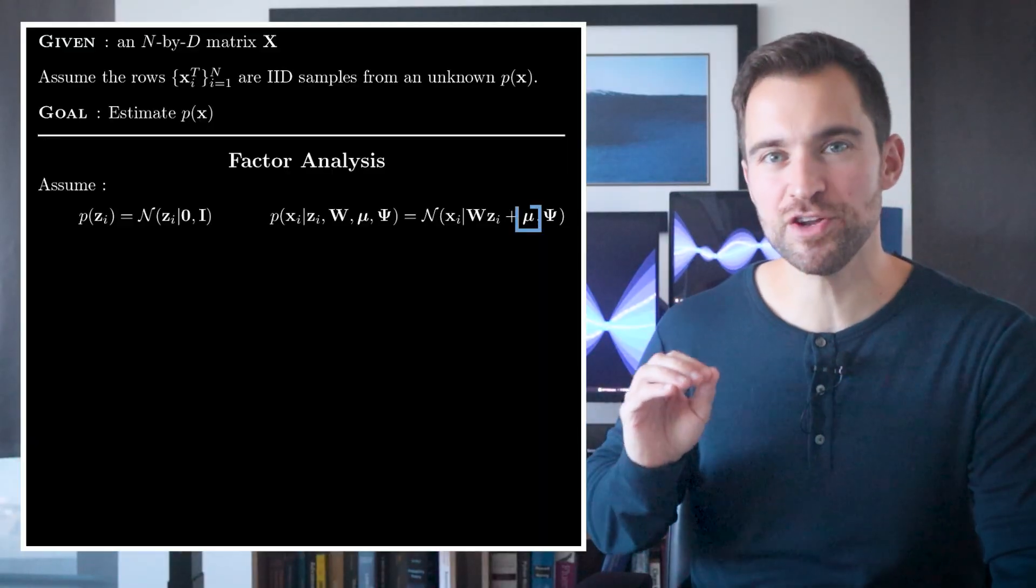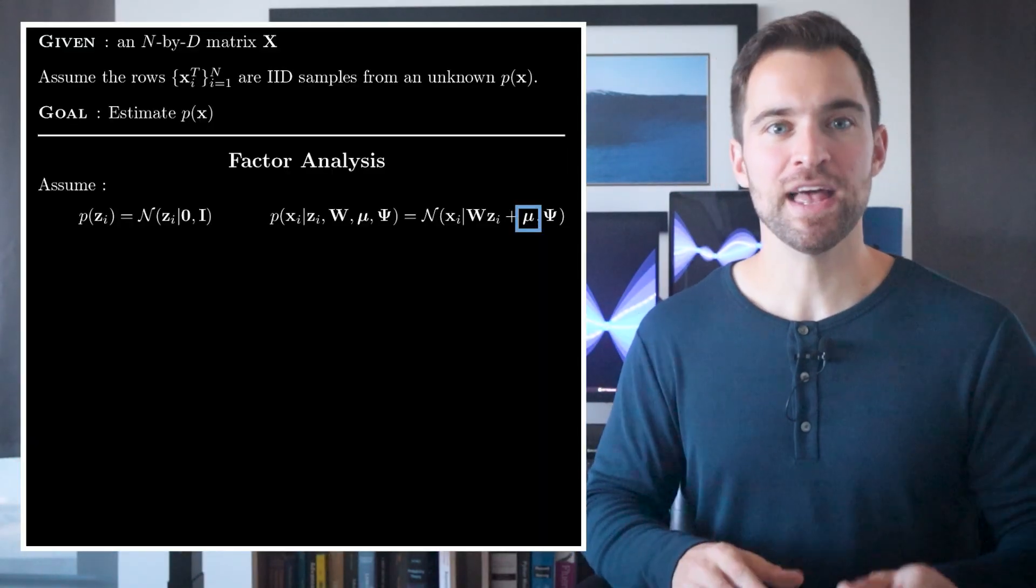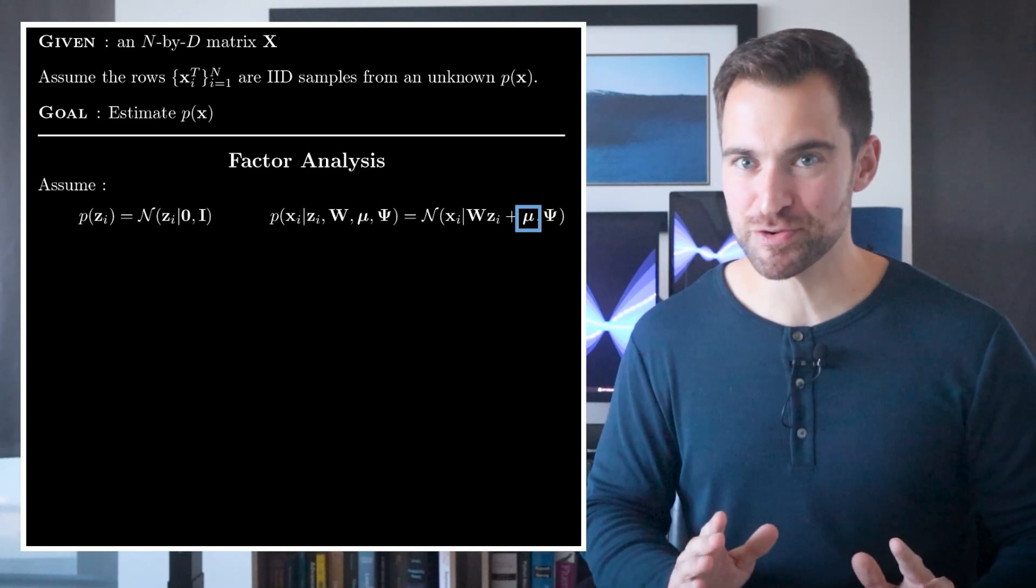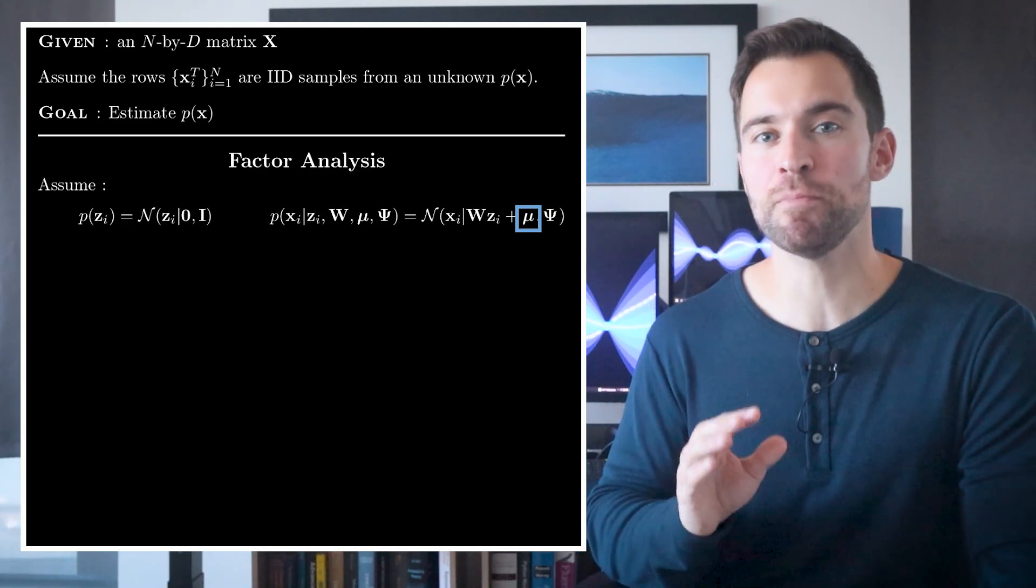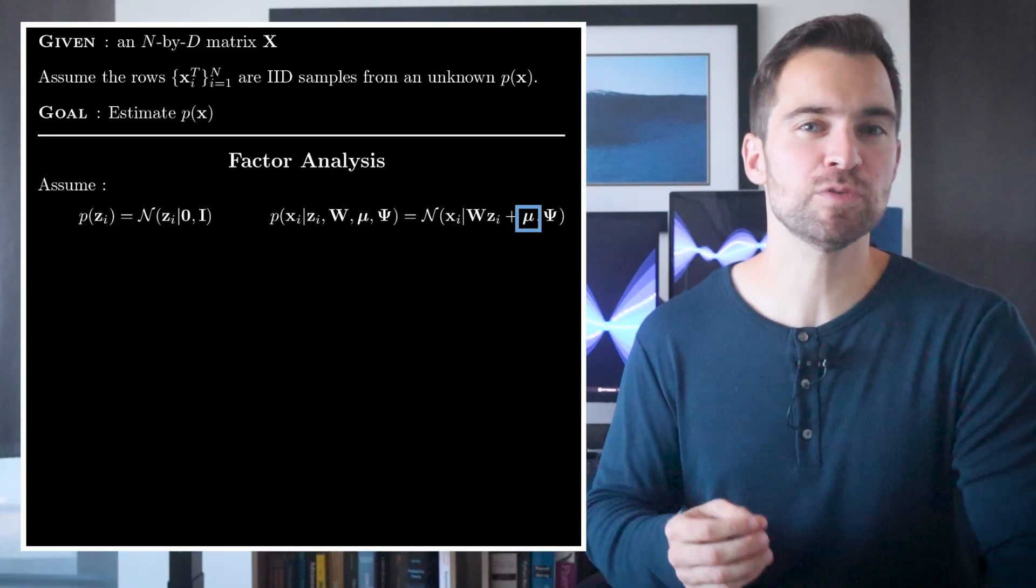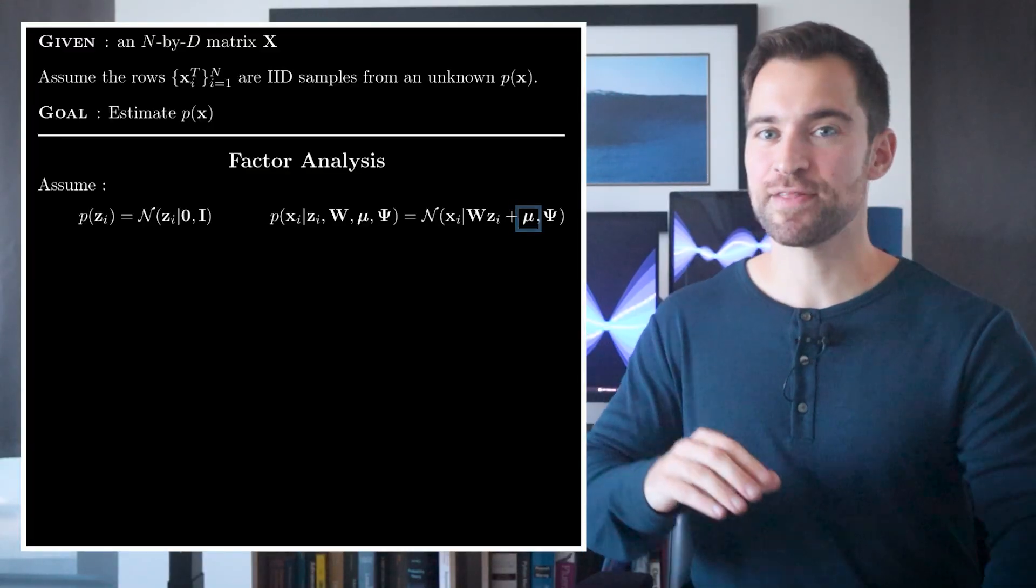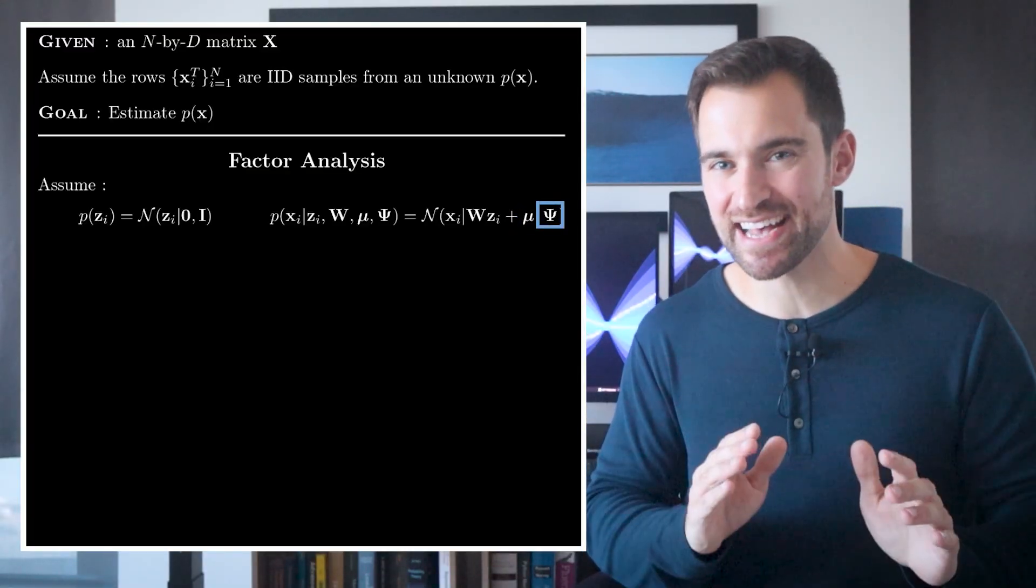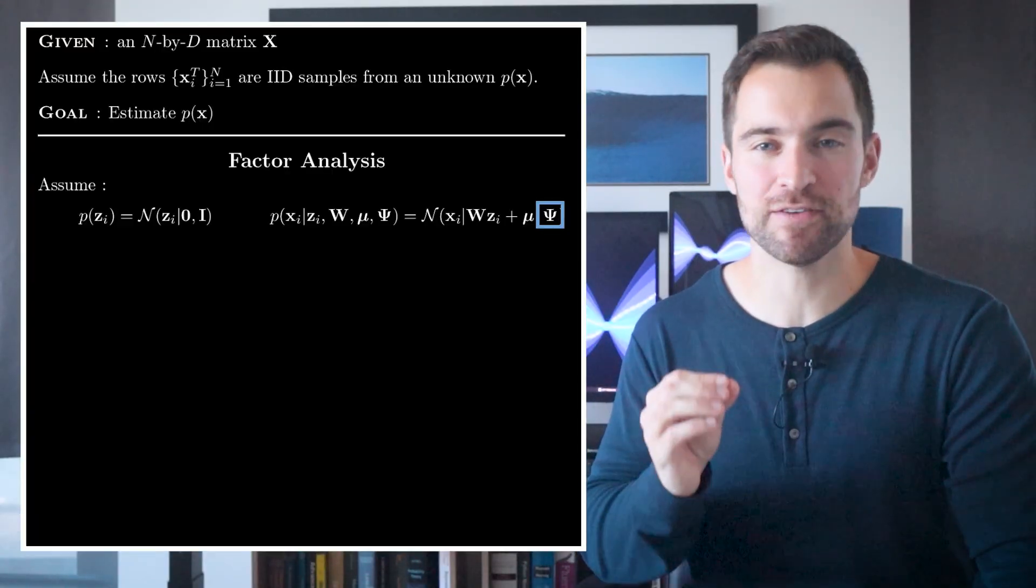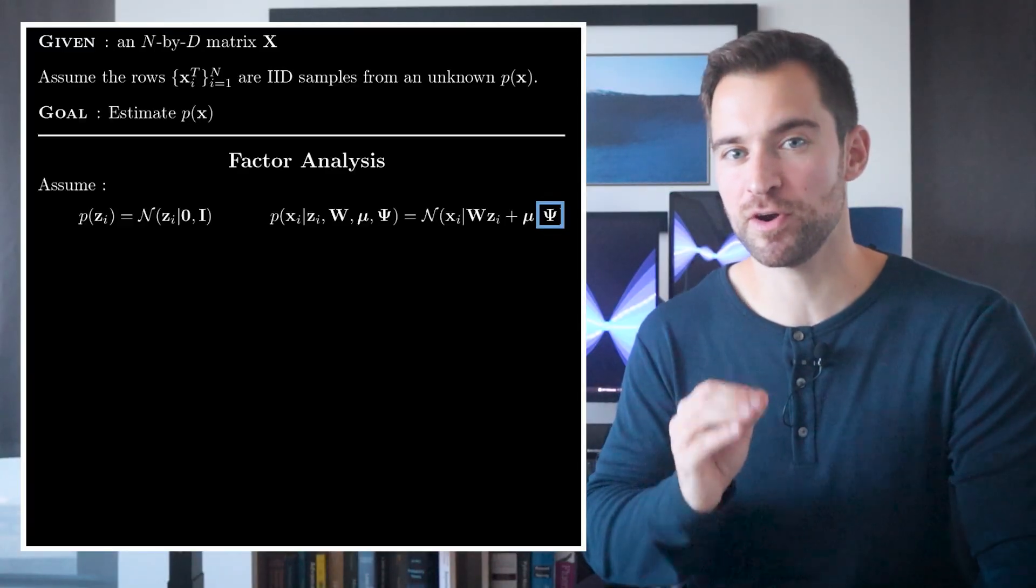Also, mu is a new parameter that didn't appear in the animation earlier. In that example, to keep things simple, I assume the columns of X had mean zero. Well, that's not true in general. So, mu is here to model those column means. What it does is, it allows everything else to proceed as though the columns of X did in fact have mean zero. Next, the covariance matrix is psi, where psi is a diagonal matrix where the diagonals are the psi d's of each column. These are the column-specific noise variances from earlier.